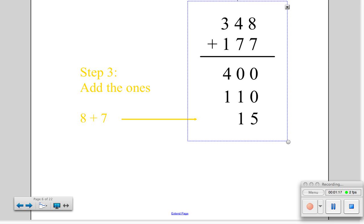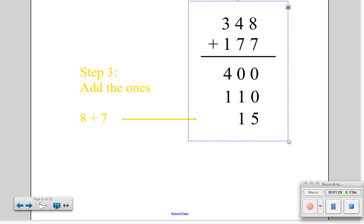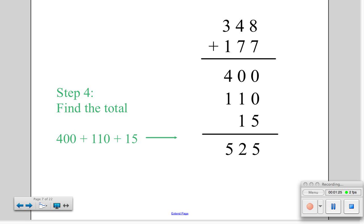Step 3 is to add the ones. 8 plus 7 is 15. Finally, we'll find the total by adding in our head. 400 plus 110 equals 510. 510 plus 15 equals 525.